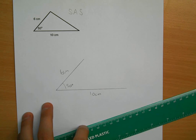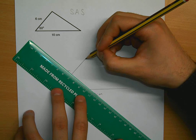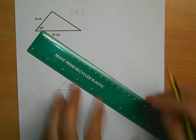To finish off my triangle, all I have to do is join up these sides. And we are finished.